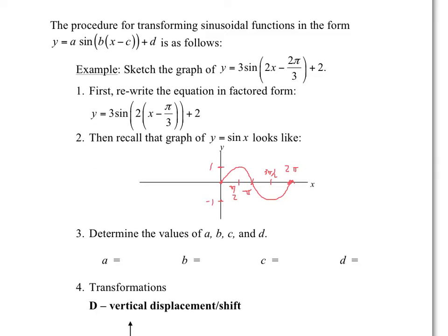Let's identify the values of A, B, C, and D. A is pretty obvious — A equals 3. B equals 2, that's where that 2 comes from after factoring. The value of C: notice it's x minus C, so our C value is positive — it is π over 3. And D is plus 2.